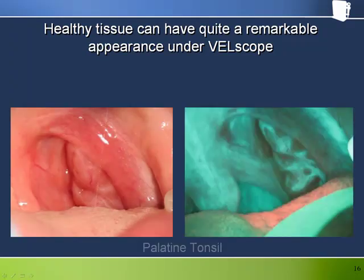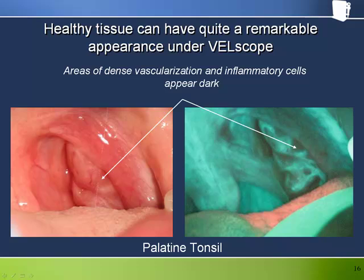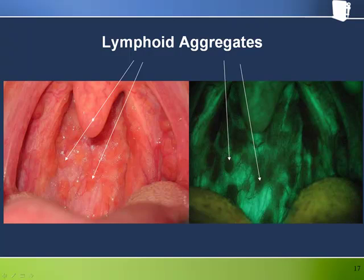Some structures in the mouth have quite a remarkable appearance under Velscope. A good example is the palatine tonsil, with areas of dense vascularization and inflammatory cells appearing quite dark. The darkened anterior tonsillar pillar is again evident in these pictures. Occasionally, collections of so-called lymphoid aggregates can populate the rear oropharyngeal wall and, because of their blood content, have a strikingly dark appearance when viewed under fluorescence visualization.